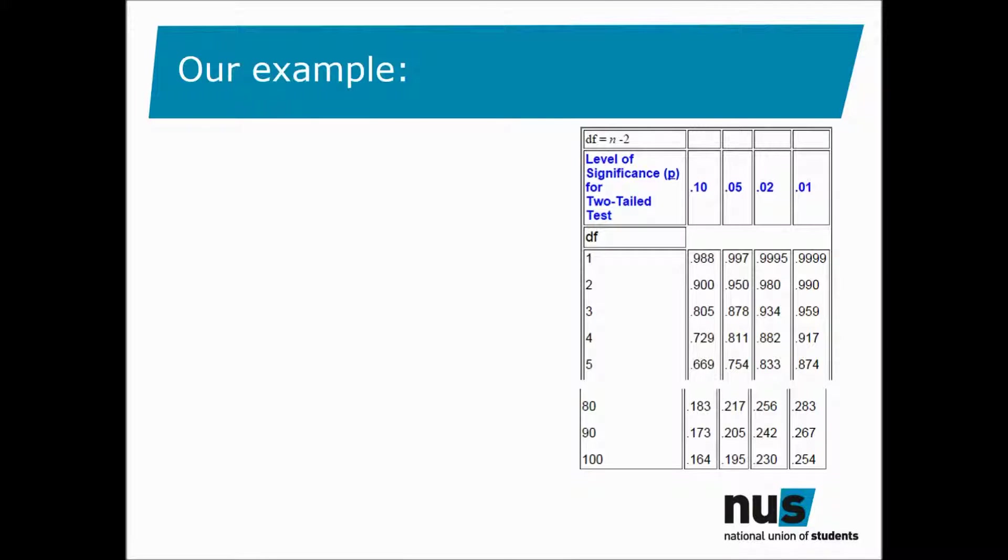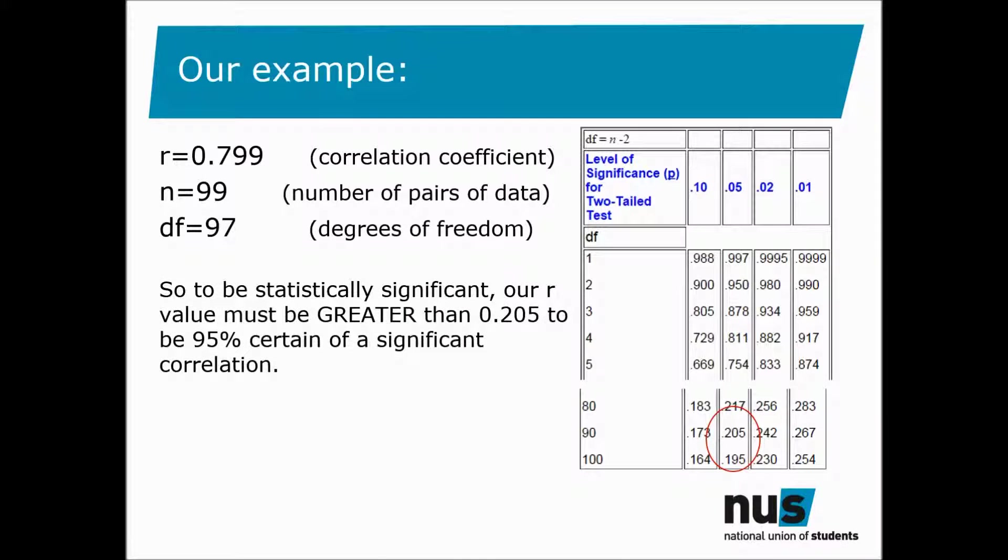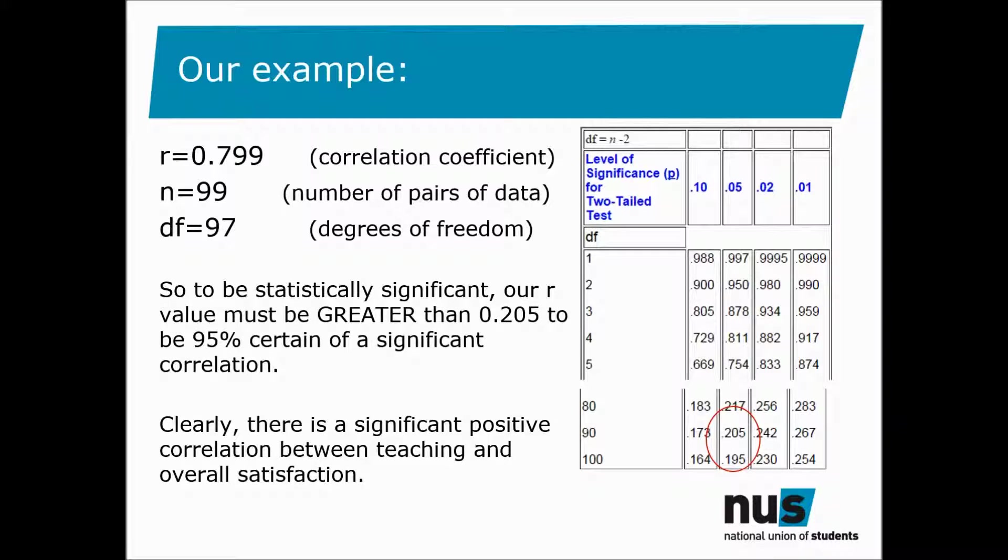So in our example the correlation coefficient R is 0.799. The number of pairs of data N is 99 so our degrees of freedom DF is 97. Looking at the table we don't have a value for 97 but if we round down to 90 you can see that in order to be statistically significant our R value must be greater than 0.205 to be 95% certain of a significant correlation. Clearly there is a significant positive correlation between teaching and overall satisfaction based on our analysis.